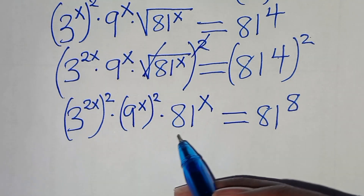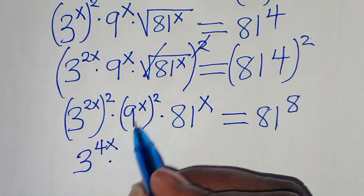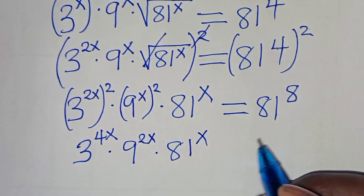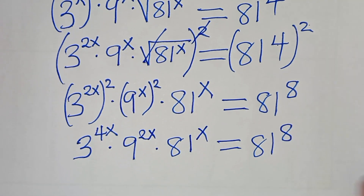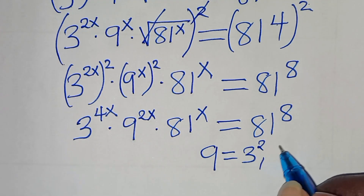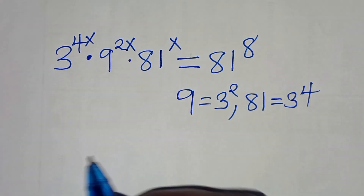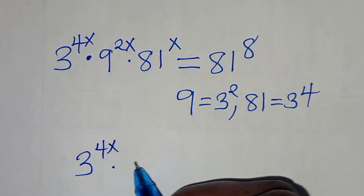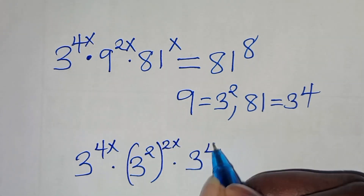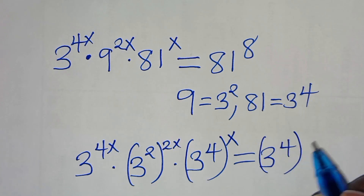Now, expanding the exponents: 3 to the power of 2x times 2 is 4x, multiplied by 9 to the power of x raised to the power of 2, which is 9 to the power of 2x, multiplied by 81 to the power of x, equals 81 to the power of 8. We can express 9 as 3 to the power of 2 and 81 as 3 to the power of 4. Substituting, we have 3 to the power of 4x, multiplied by 3 to the power of 2 raised to the power of 2x, multiplied by 3 to the power of 4 raised to the power of x, equal to 3 to the power of 4 raised to the power of 8.